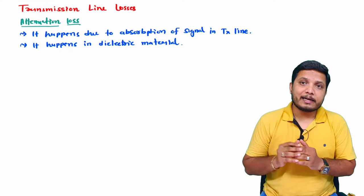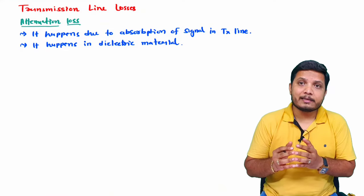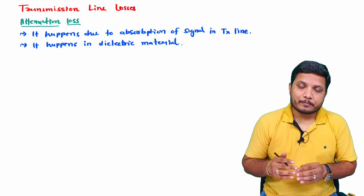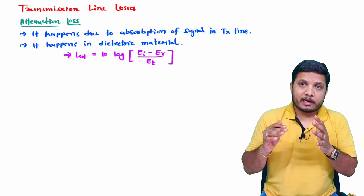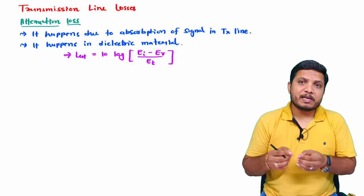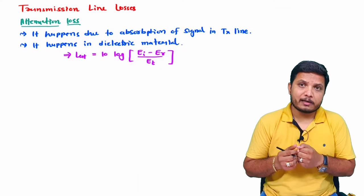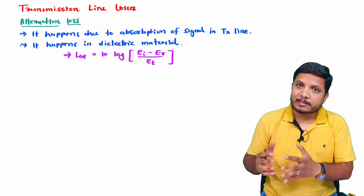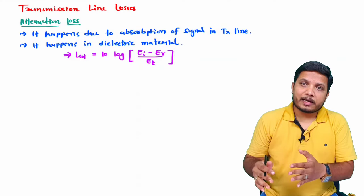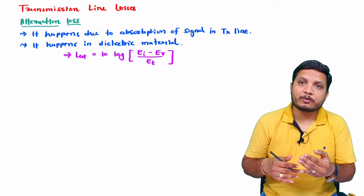Here EI is incident energy, ER is reflected energy, and ET is total energy transmitted through the transmission line. Since energy is proportional to the square of voltage, we can place that relation here to rewrite the basic formula of attenuation loss in terms of voltages.